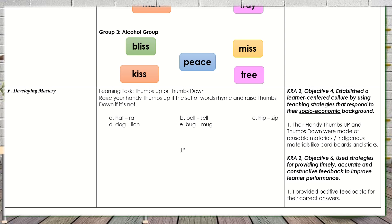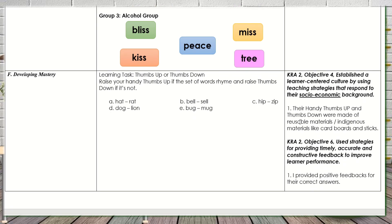For the thumbs up or thumbs down activity, learners used old cardboards and sticks. By doing that, I touched CRA 2, Objective 4 — establishing a learner-centered culture by using teaching strategies that respond to their socio-economic background. Socio-economic background is about perceptions of social status and class — and this also relates to resourcefulness and saving. Their handy thumbs up and thumbs down were made of reusable or indigenous materials like cardboard and sticks. CRA 2, Objective 6 — feedback — was also touched again.